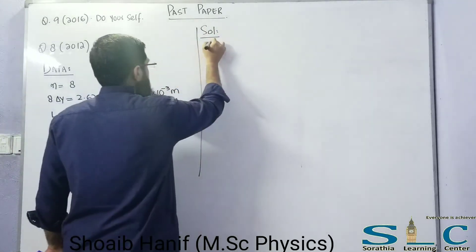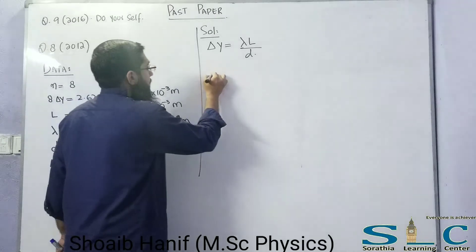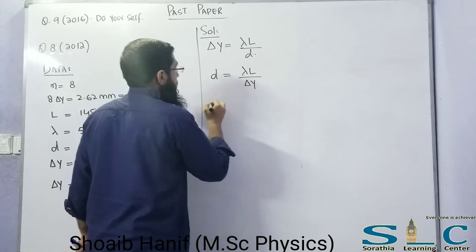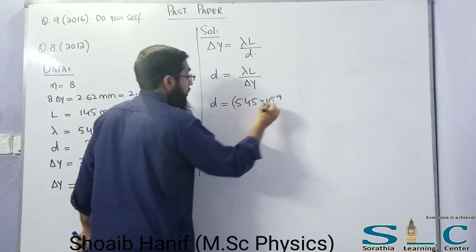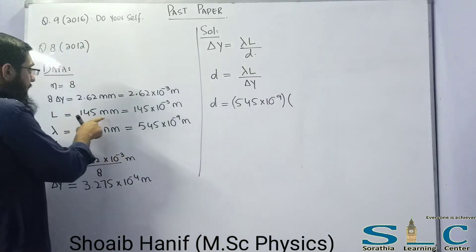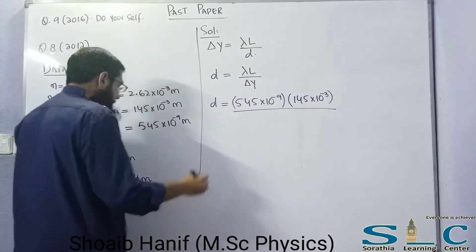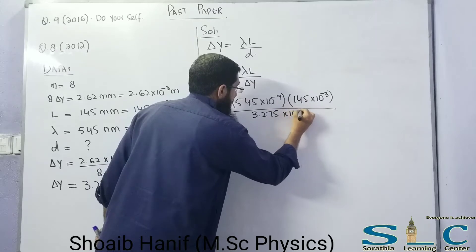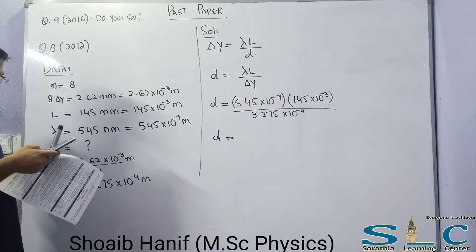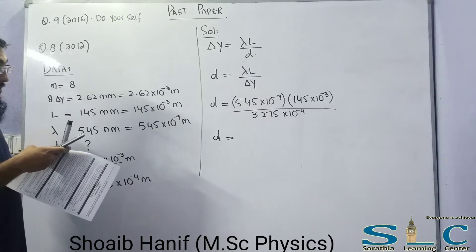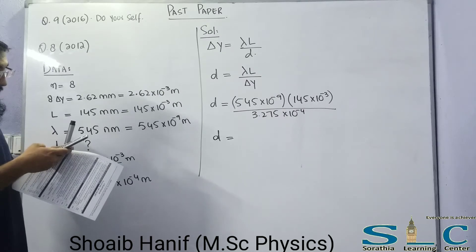Using the formula Δy = λL / d, we rearrange for d: d = λL / Δy. Substituting: d = (545×10⁻⁹ × 145×10⁻³) / 3.275×10⁻⁴. Solving on the calculator gives us the value of d.